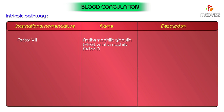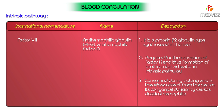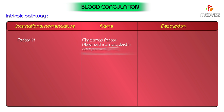Factor 8 is required for the activation of factor 10 and thus formation of prothrombin activator in the intrinsic pathway. It is consumed during clotting and is therefore absent from the serum. Its congenital deficiency causes classical hemophilia, which is an inherited disease in which the clotting time is prolonged. Factor 9, known as Christmas factor, plasma thromboplastin component, or anti-hemophilic factor B, is also known as auto-prothrombin 2.